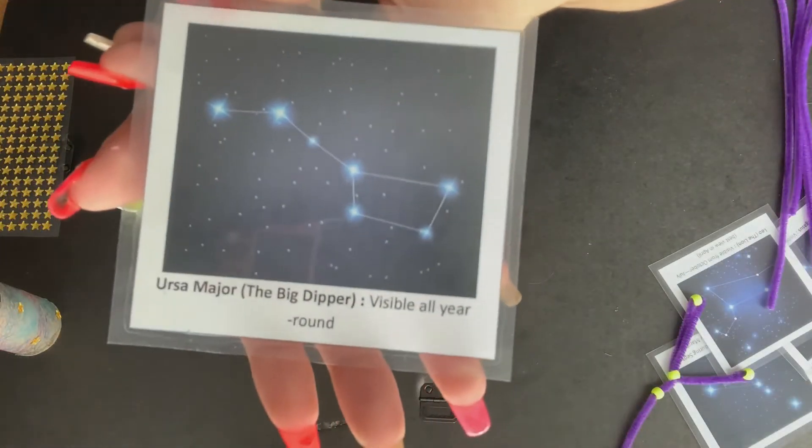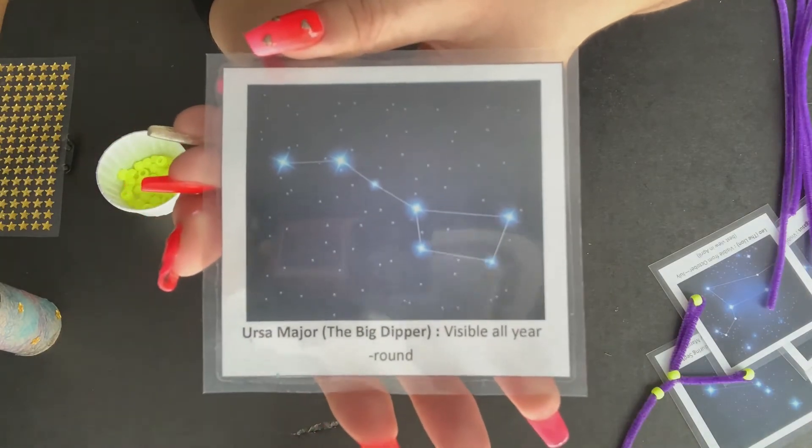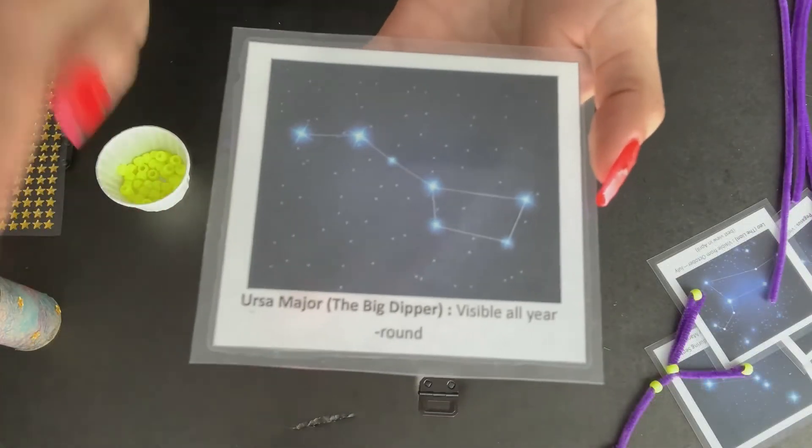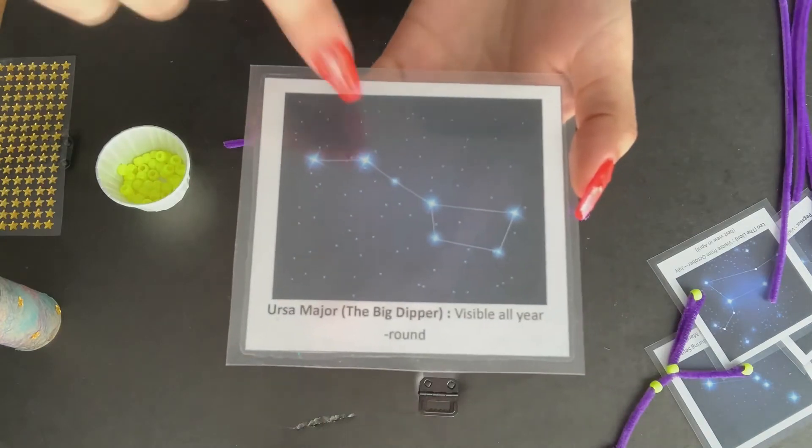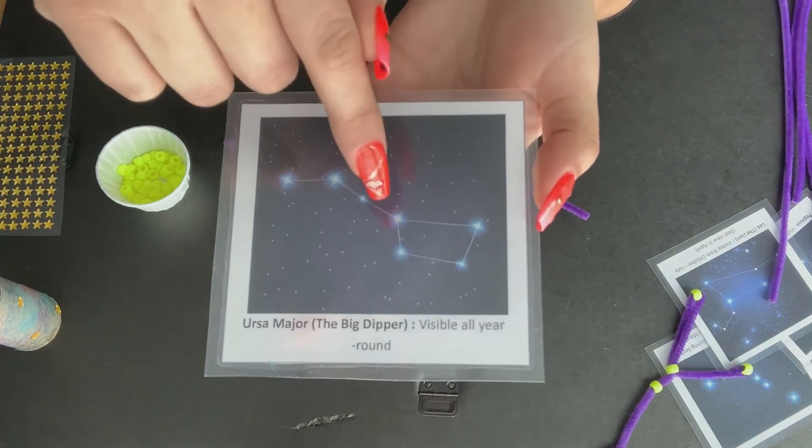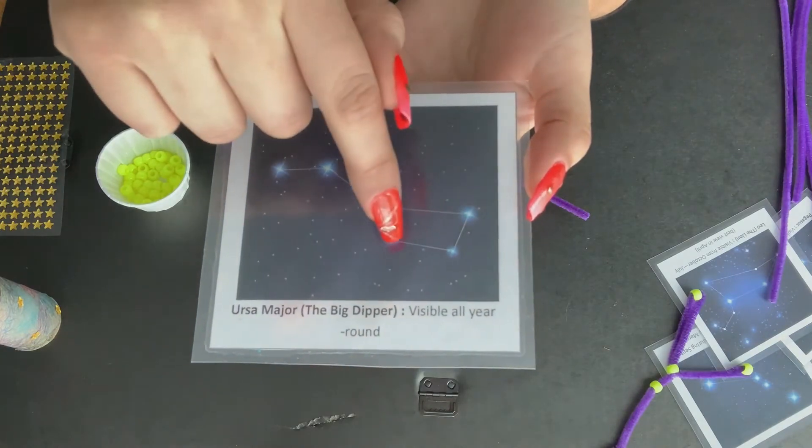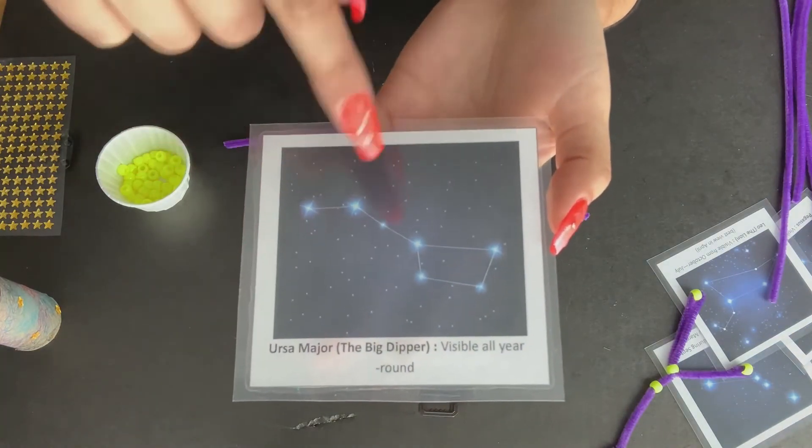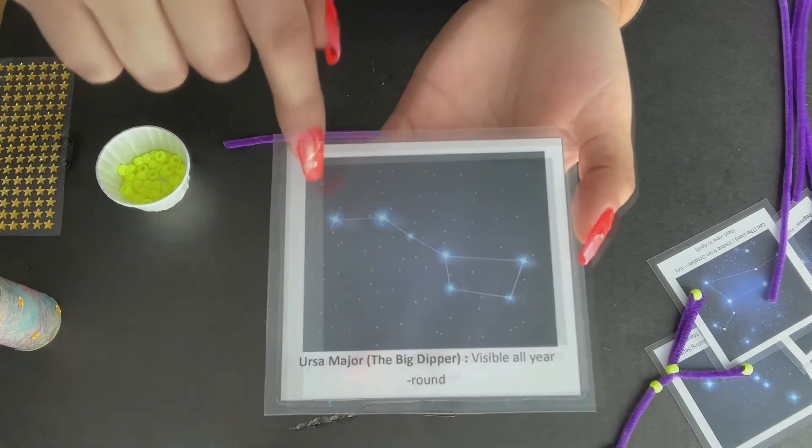And next I'm going to try Ursa Major, also known as the Big Dipper. So with this one, it kind of looks like a spoon. So we have four stars there making up the spoon, and then we have the handle.